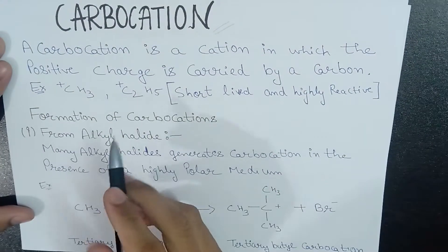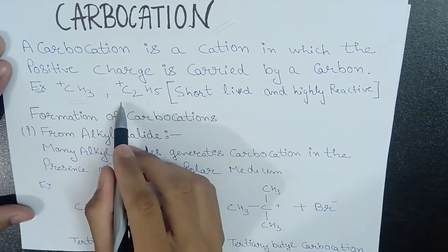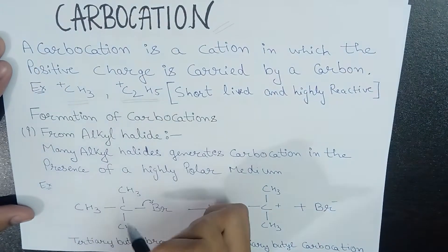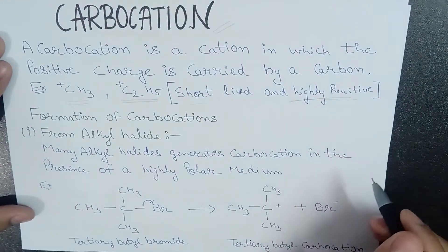For example, we'll be considering two examples: first one is methyl carbocation and another is ethyl carbocation. These carbocations are short-lived and highly reactive species which exist in nature.